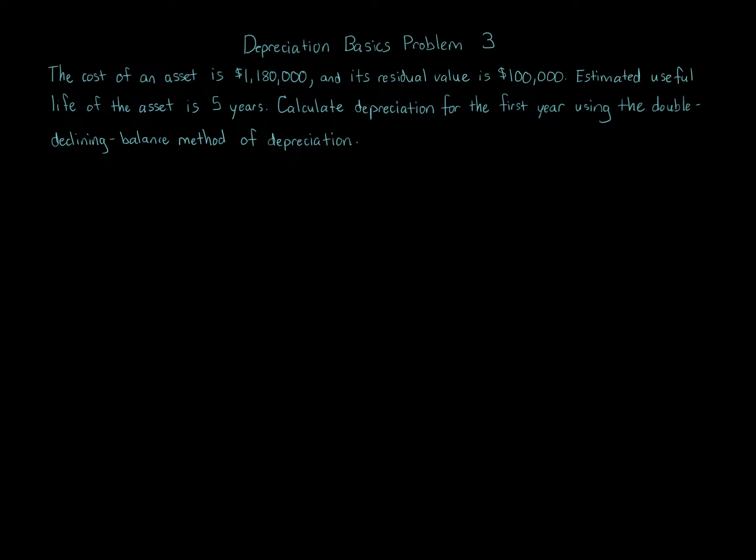Depreciation basics problem 3. The cost of an asset is $1,180,000 and its residual value is $100,000. The estimated useful life of the asset is 5 years. Calculate depreciation for the first year using the double declining balance method of depreciation.